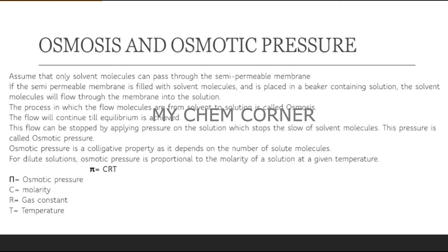This flow continues until an equilibrium is achieved, meaning there are equal amounts on either side. To stop the flow, you apply pressure at the solution side - since solvent particles are moving from the bag into the solution, applying pressure there stops that flow. This pressure is called osmotic pressure. Osmotic pressure is a colligative property because it depends on the number of solute particles.